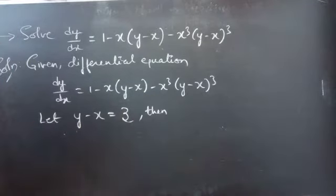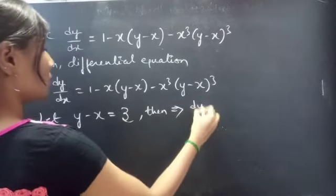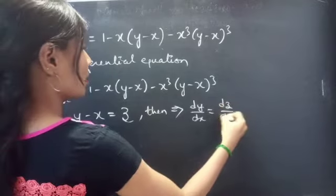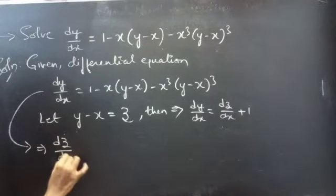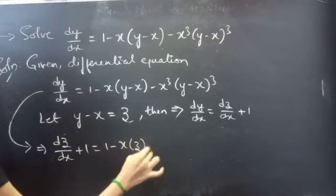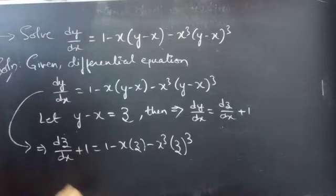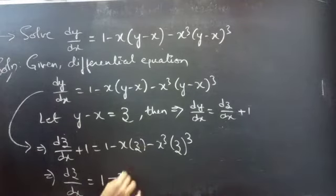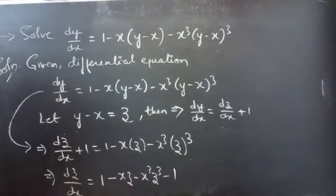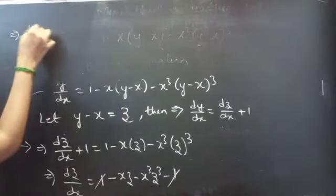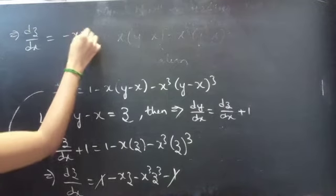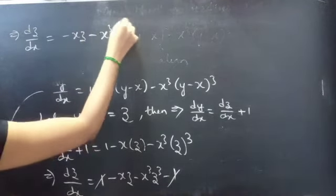When y minus x equals z, then dy/dx equals dz/dx plus 1. The original equation becomes dz/dx + 1 equals (1 - x)z - x³z³. Then dz/dx equals 1 - xz - x³z³ minus 1. The 1s cancel, so the reduced equation is dz/dx equals -xz - x³z³.